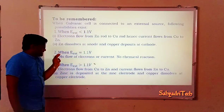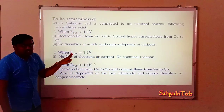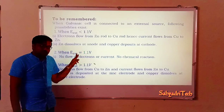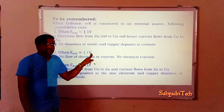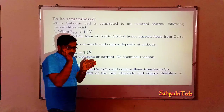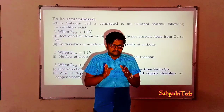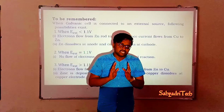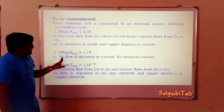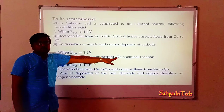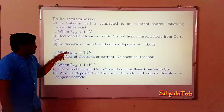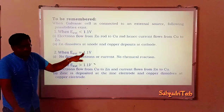Second case: if the external opposite potential is equal to 1.1 V (equal to the cell potential), there is no flow of electrons or current, and all reactions attain equilibrium. The electrochemical cell reaches equilibrium when the external opposite potential equals the cell potential.